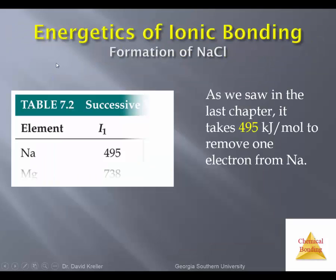Let's think about everything that has to happen to form that ionic compound from the elements. We start with sodium metal — all those atoms basically have no charge. We know that we have to have sodium ions in the product, so one of the steps we must go through is ionizing sodium atoms. That energy is positive; it takes energy to remove electrons from sodium. The removal of one electron is referred to as the first ionization energy. Removing one electron from each of a mole of gas-phase sodium atoms requires an input of 495 kilojoules per mole.